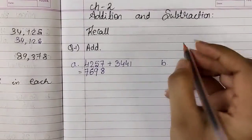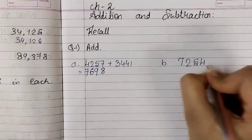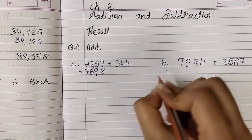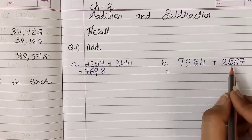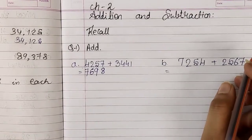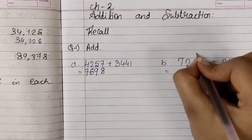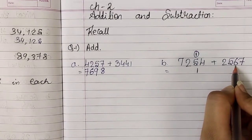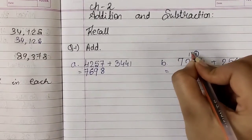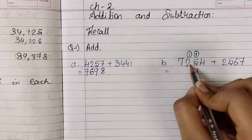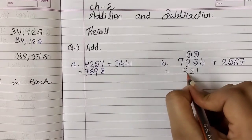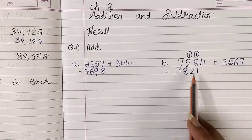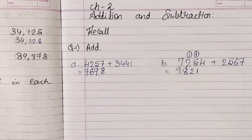Okay. Now number B: 7,254 plus 2,567. So students, here it is 4, here it is 7. What is 4 plus 7? 11. 1 we will carry over in the tens place. Now what is 1 plus 5? 6. 6 plus 6? 12. So 2 here, 1 carry over. What is 1 plus 2? 3. 3 plus 5? 8. And 7 plus 2? 9. So students, इसका answer क्या हो गया? 9,821. Understood?